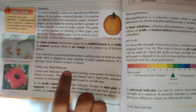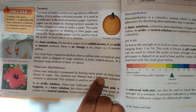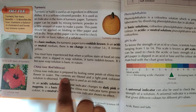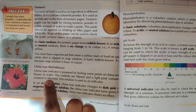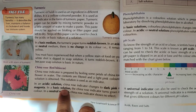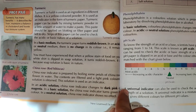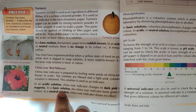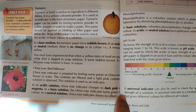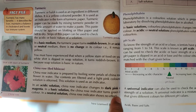China Rose indicator is prepared by boiling some petals of the china rose flower in water. The contents are filtered and a light pink colored solution is obtained, which is used as an indicator. In an acidic solution, China Rose indicator changes to dark pink or magenta. In a basic solution, the China Rose indicator turns green in color. In a neutral solution, China Rose indicator shows no effect.